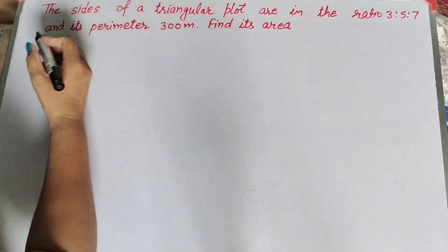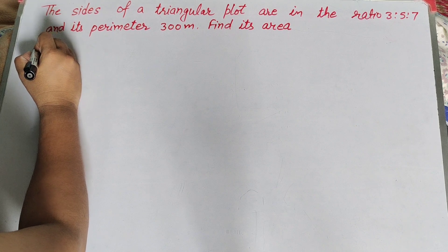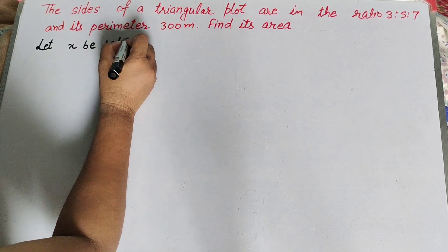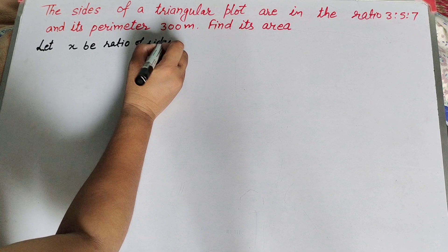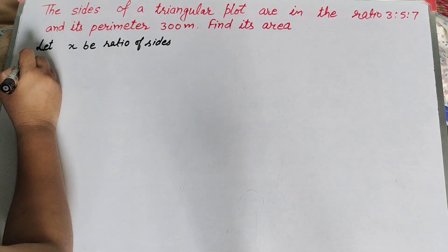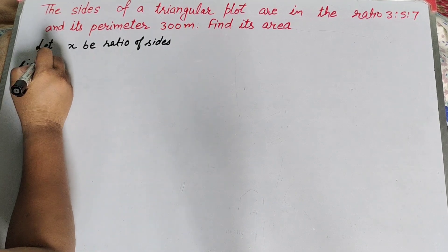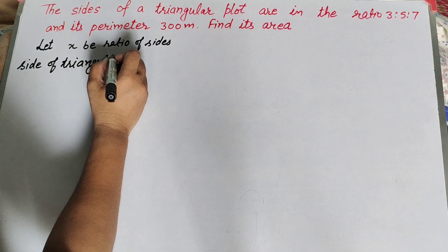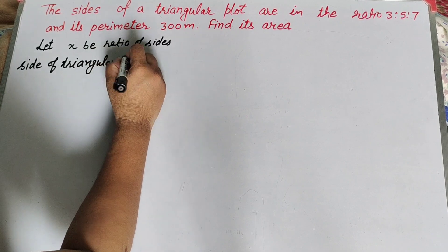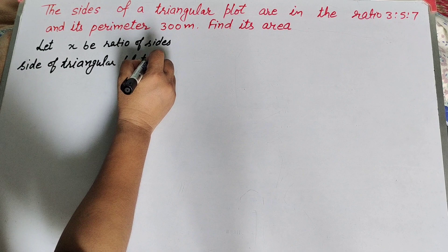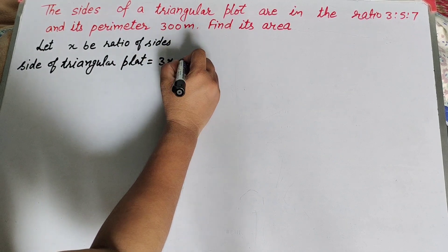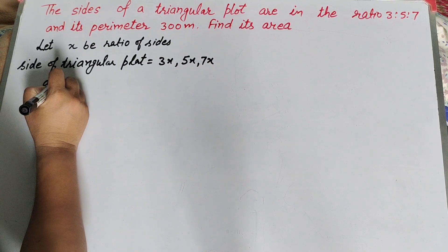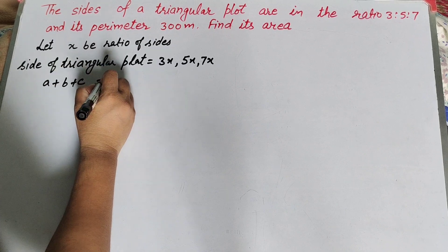To find the area, we first find the sides of the triangle. Let x be the ratio factor. Then the sides of the triangular plot are equal to 3x, 5x, and 7x.